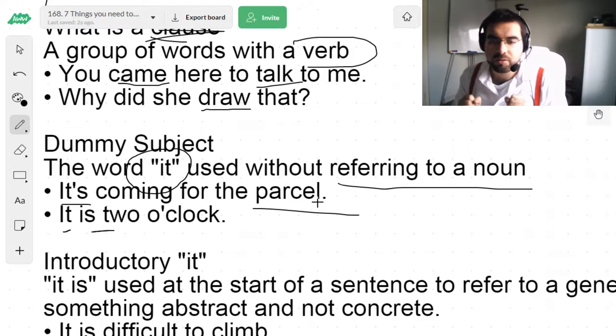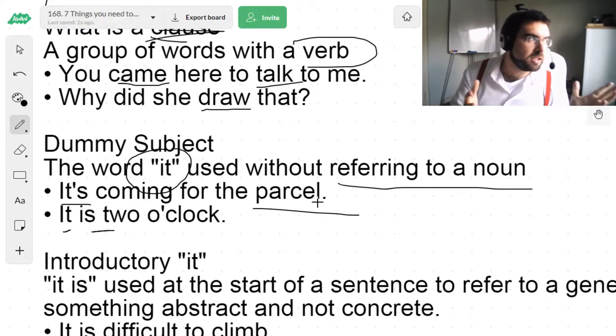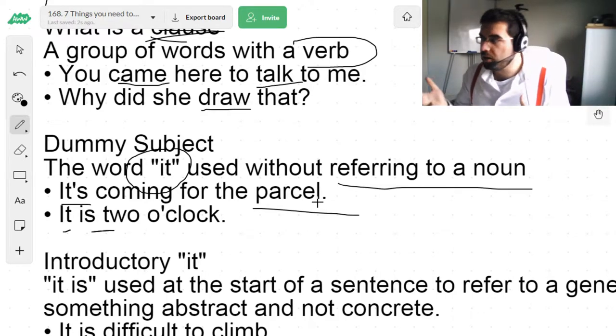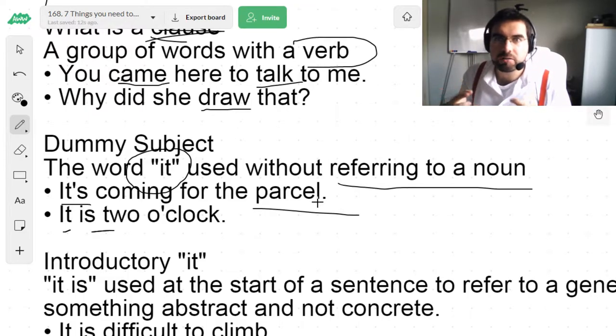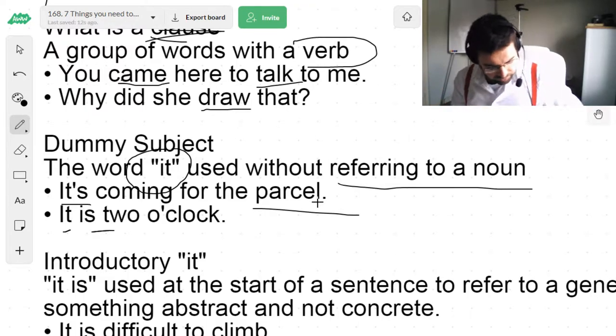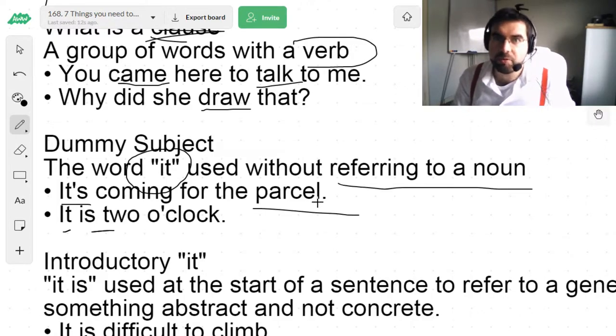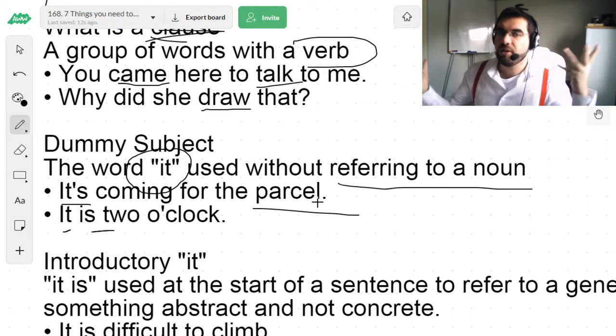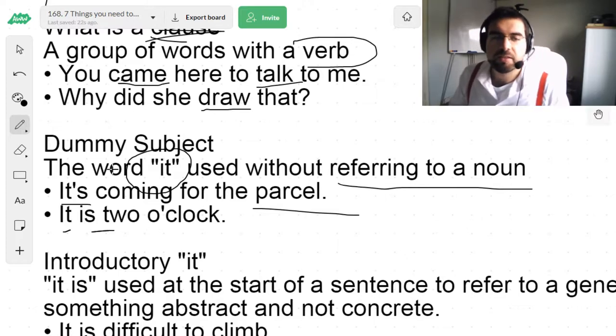What's cold? The water. The food. The weather. The car. The house. The metal. It's hot. What's hot? The house. The car. The weather. The people. The water. I don't know. It. Dummy subject without referring to a noun. Number two.